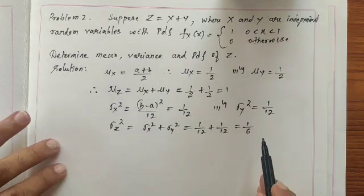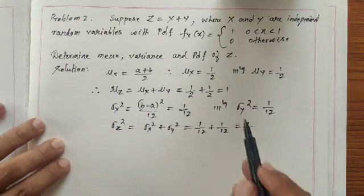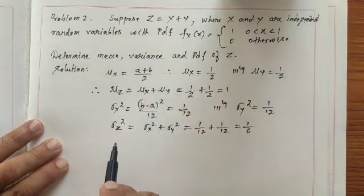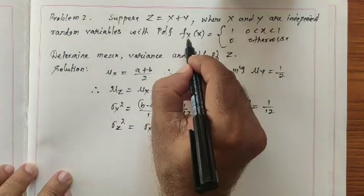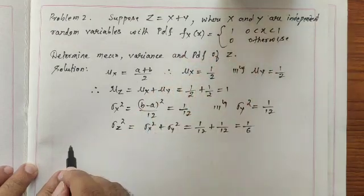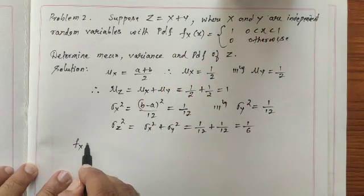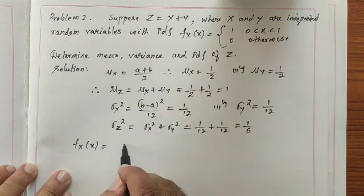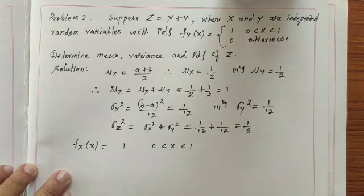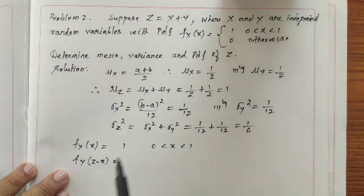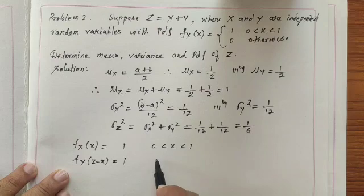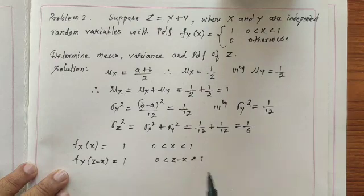Next, we find the probability density function. Using the convolution formula, f_x(x) = 1 whenever 0 < x < 1, and f_y(z − x) = 1 whenever 0 < z − x < 1, and 0 otherwise.